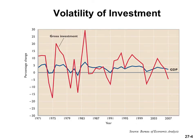This slide shows the relationship between real GDP over time and gross business investment over that same period. The blue curve traces real GDP from 1971 through 2007, and the red curve traces gross business investment over that same period of time.